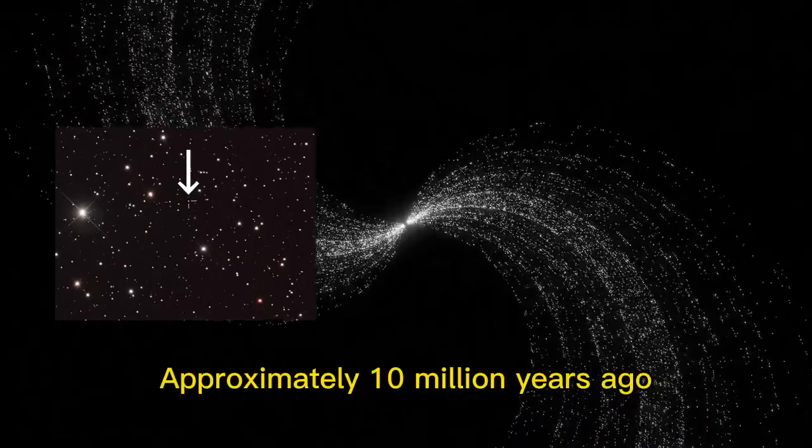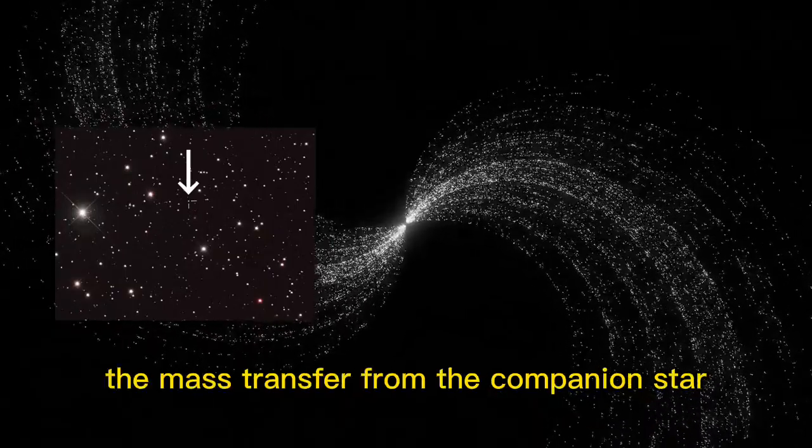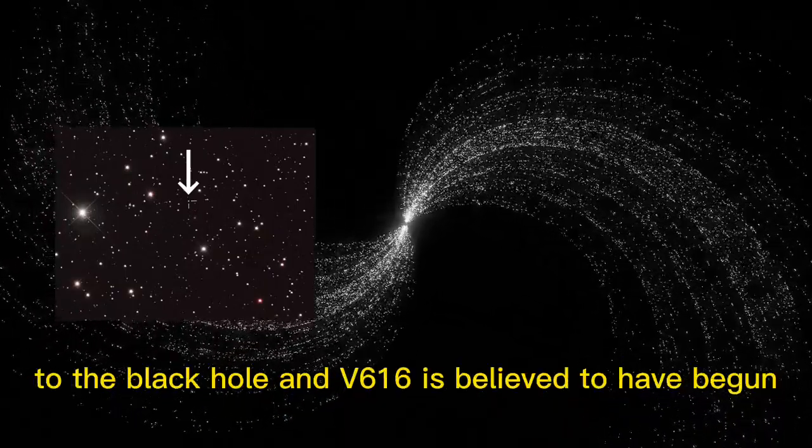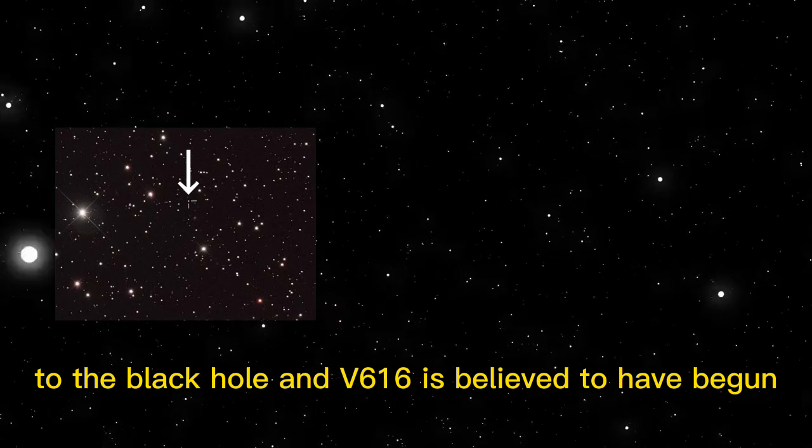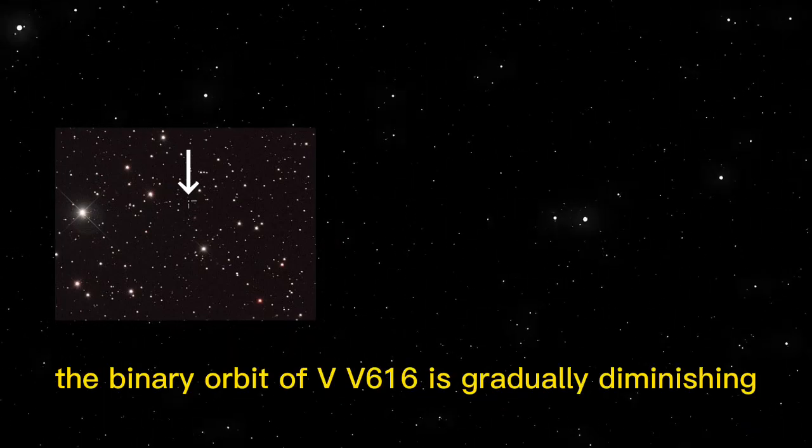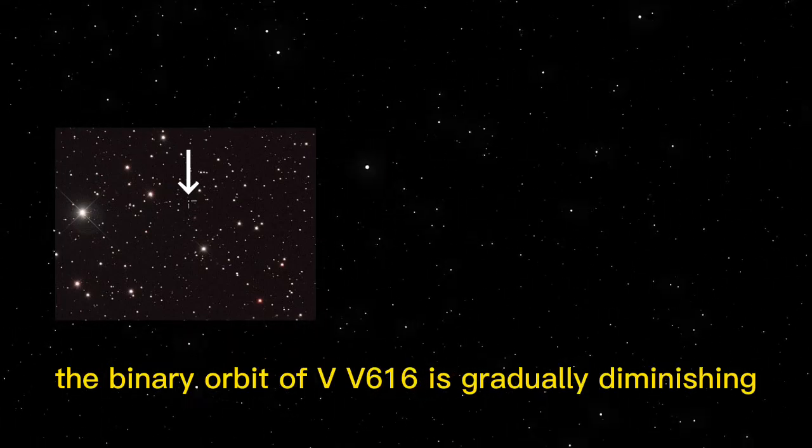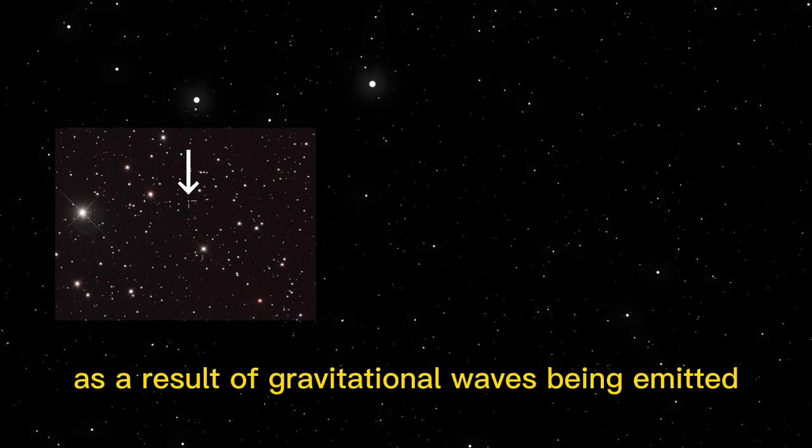Approximately 10 million years ago, the mass transfer from the companion star to the black hole in V616 is believed to have begun. The binary orbit of V616 is gradually diminishing as a result of gravitational waves being emitted.